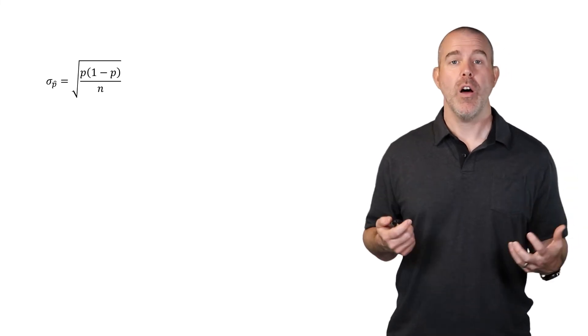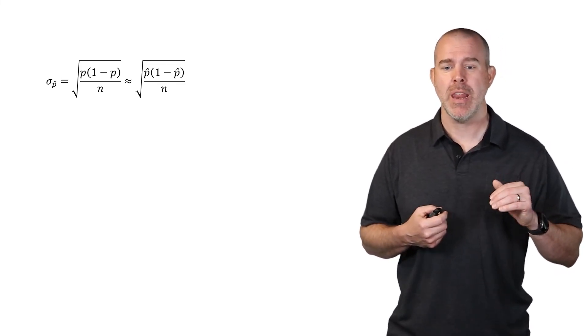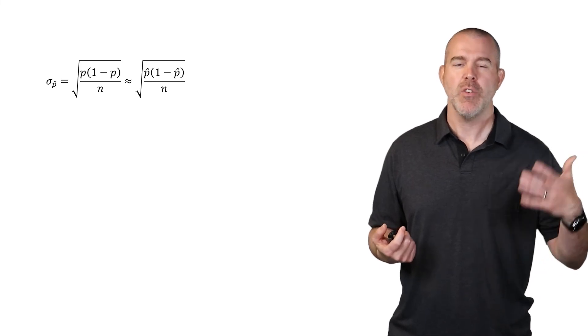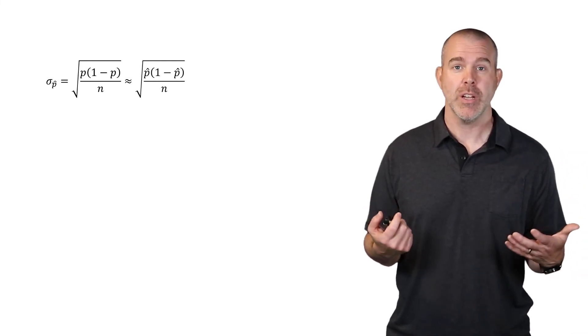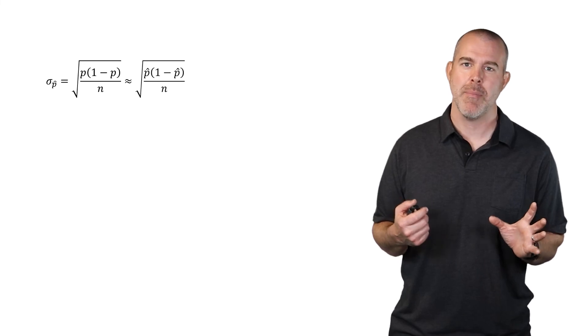A couple of final caveats. There are problems where this method isn't as precise as we think. Because we don't have the actual p and approximated it with p-hat, the method actually underestimates coverage — in practice you may only be right about 93 or 94% of the time, not exactly 95%.